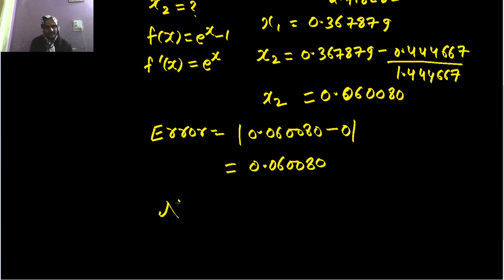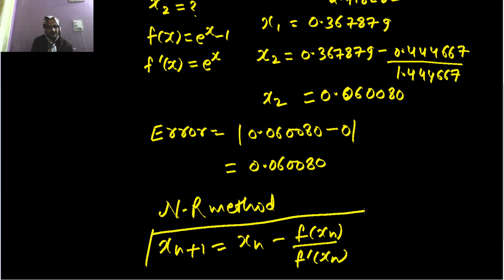For Newton-Raphson method, the iterative formula is x(n+1) equals xn minus value of function at xn divided by value of derivative at xn. This is the Newton-Raphson method iterative formula.